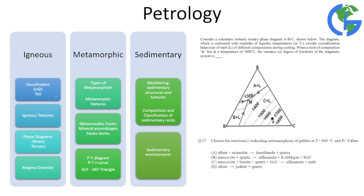Looking at petrology, there are three types: igneous, metamorphic, and sedimentary. In igneous, classification is important, igneous textures give very good questions, and NAT questions can come from binary and ternary diagrams — almost every year you will get a question from here in NAT form. There can also be questions on magma diversity.